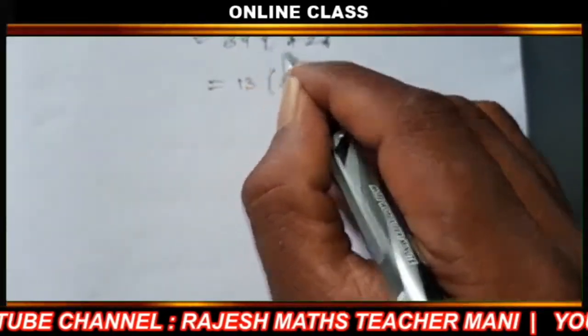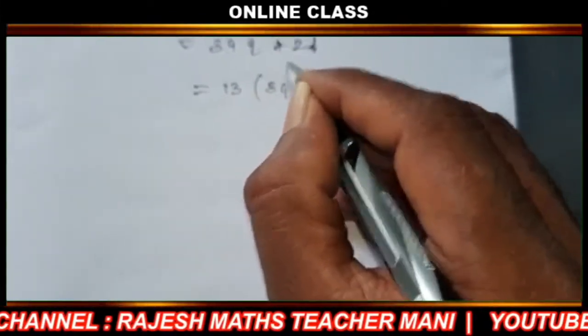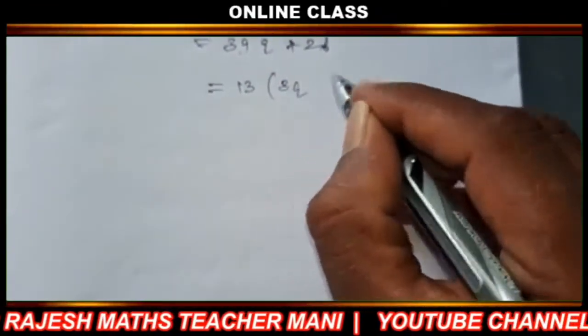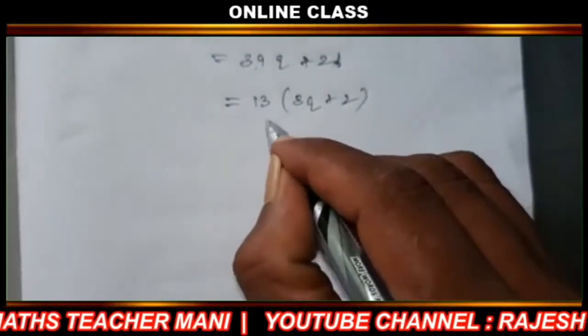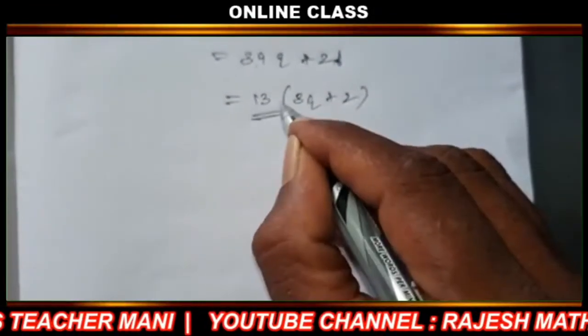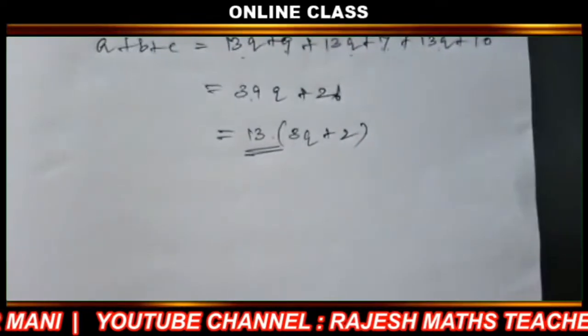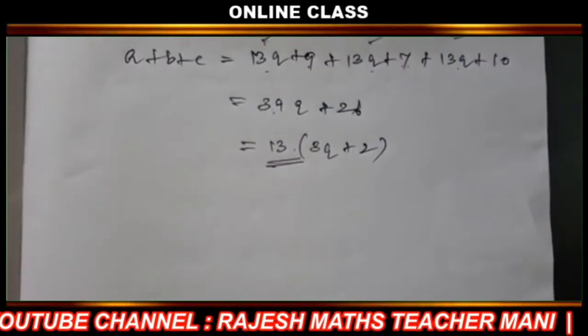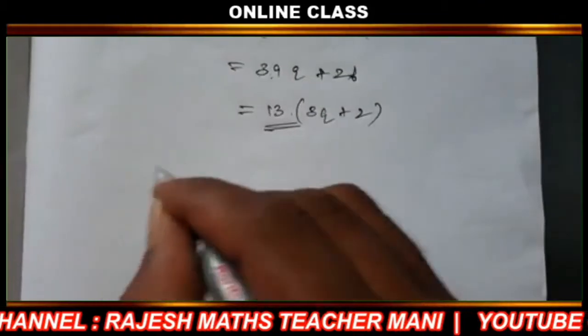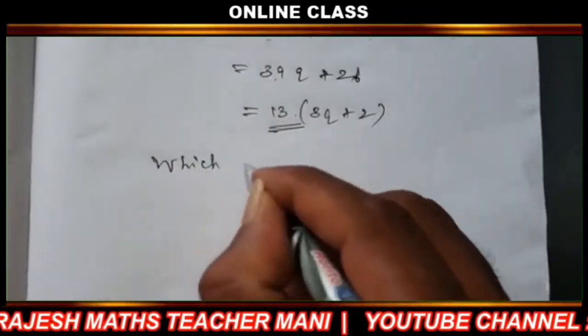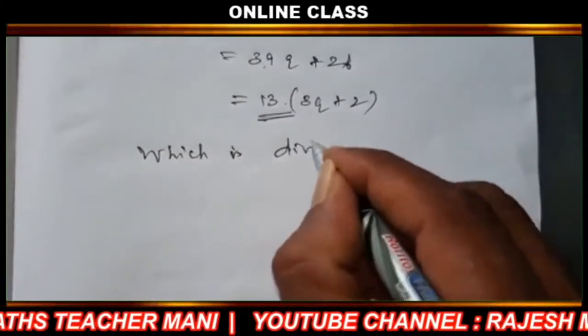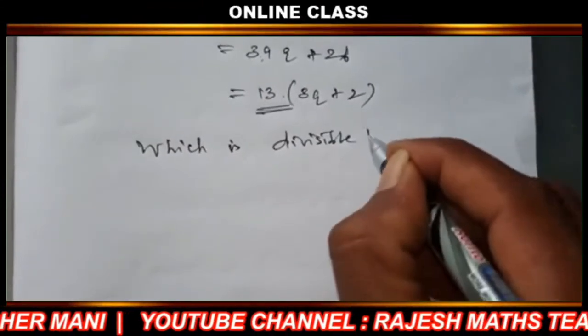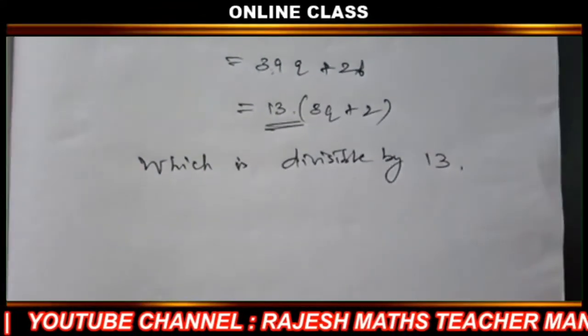So we have 39q plus 26, which is 13 times (3q plus 2). This is divisible by 13. Hence a plus b plus c is divisible by 13.